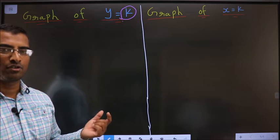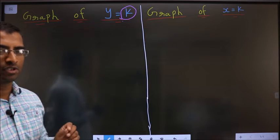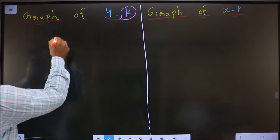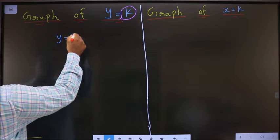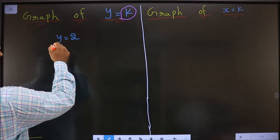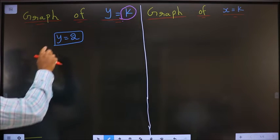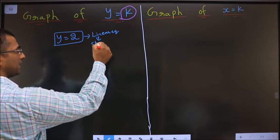First, let's say I want to draw the graph for y equal to k. Let's take k to be 2. I want to draw the graph of this equation. Looking at the equation, first analysis is it is a linear equation. Next analysis, for every linear equation, I will get a straight line.